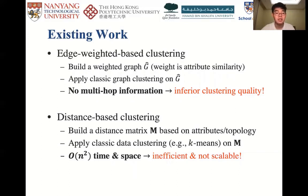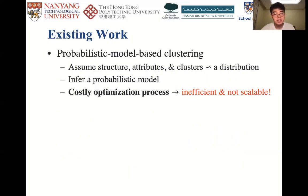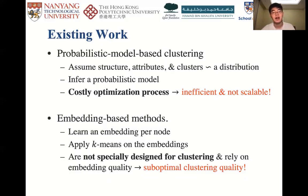The second methodology constructs a distance matrix M to capture multi-hop topology proximities and attribute similarities between all node pairs, and then employs K-means algorithms on matrix M to obtain clusters. They require O(n²) time and space overheads, making them unable to process large-scale attributed graphs efficiently. The third category uses probabilistic models involving a large number of parameters and an expensive optimization process — they cannot scale to large-scale data either. The fourth category is embedding-based: they learn an embedding vector for each node capturing topology and attribute information, then apply K-means on the embeddings, yielding suboptimal clustering quality as they are not specially designed for clustering.